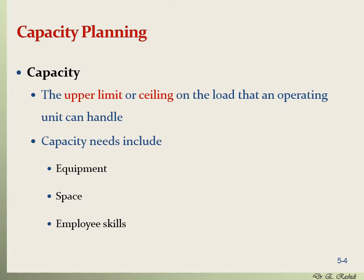The need for capacity includes equipment — how fast that equipment can produce a product and how much it can produce. Also important is the capacity for space: we need space to place equipment and accommodate our workforce. Another type of capacity is employee skills. When you hire an employee, they have different capabilities in terms of what they know and how efficiently they can work — that is their capacity, sometimes called soft capacity.